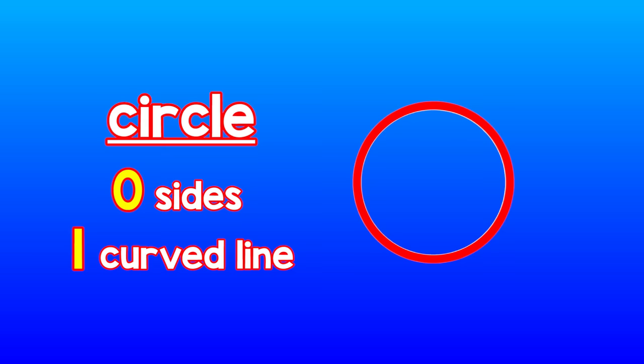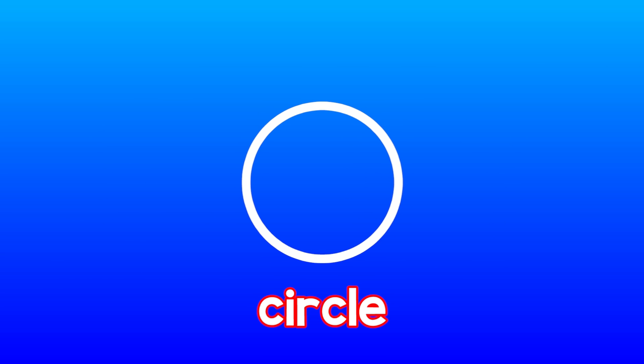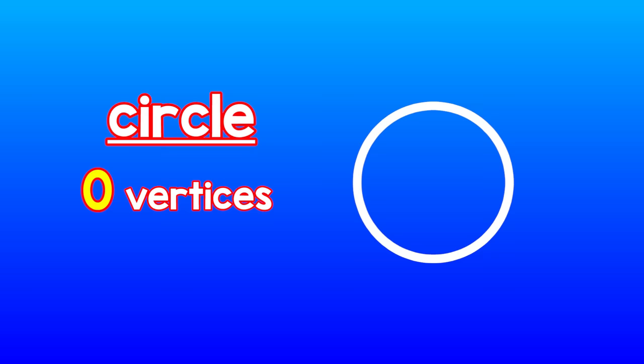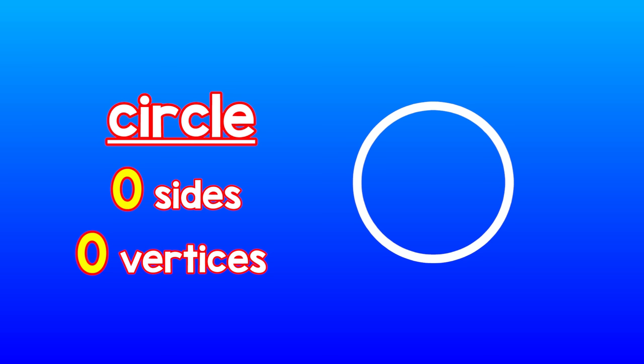This is a circle. Let's move and count the sides of a circle. A circle has zero sides but has one curved line. Let's move and count the vertices of a circle. A circle has zero vertices but has one curved line. A circle has zero sides and vertices.